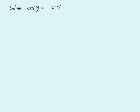In this tutorial we're going to solve the trig equation cos theta equals a negative number, in this case negative 0.5, and the method I'm going to use is often referred to as the quadrant method.